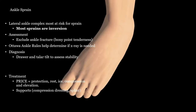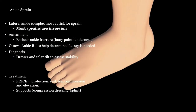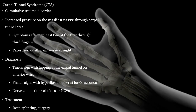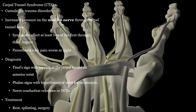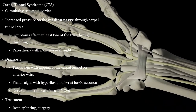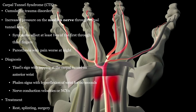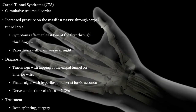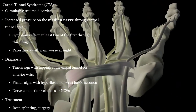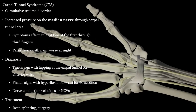Ankle sprains are very common injuries, and the most common type are inversion sprains. A sprain is a stretched out or damaged ligament, and ligaments attach bone to bone. Carpal tunnel syndrome is a compression of the median nerve through the carpal tunnel, which is a space the nerve passes through before it reaches the first three digits. This can be caused from repetitive movement like typing or any movement requiring bending of the wrist. Patients will have numbness and tingling of the first three digits accompanied by pain, usually worst at night. Physical exam signs include Tinel's sign and Phalen's test. Testing with nerve conduction velocities is diagnostic. Treatment is wrist splinting, and if this does not work, surgery to free up the median nerve.